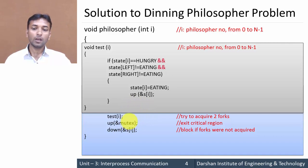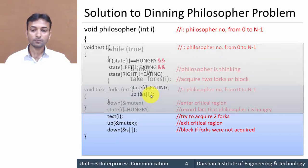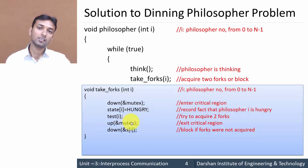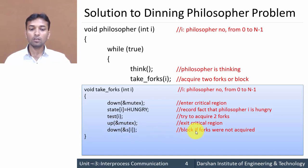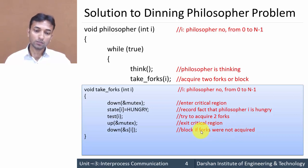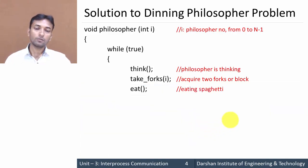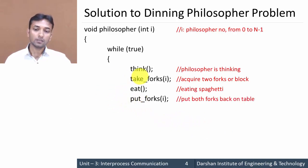If the condition is true, the state of the current philosopher is changed to EATING and up(s[i]) is called. Then up(mutex) is called to exit the critical section, allowing another philosopher to enter. Then down(s[i]) blocks the philosopher if the required forks are not available. Once the forks are available, the philosopher starts to eat. After finishing eating, the philosopher puts the forks back on the table by calling put_fork(i).